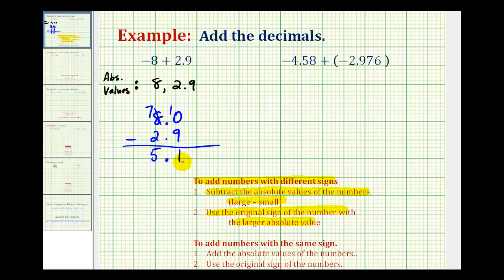So even though this difference is positive 5.1, we know this sum has to be negative. So the sum is actually negative 5.1.